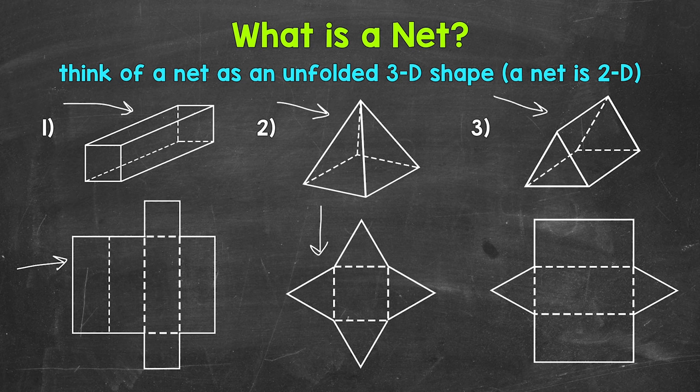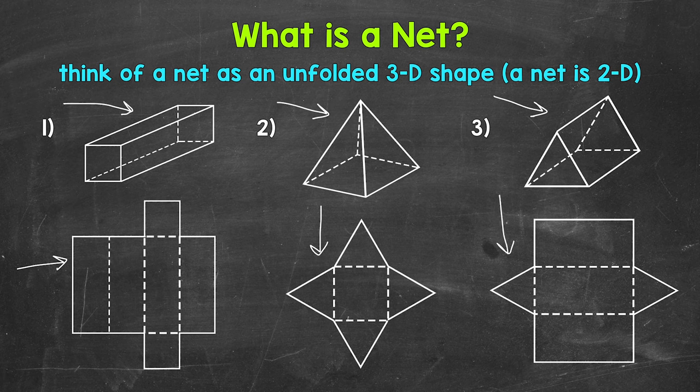And then lastly for number 3 we have a triangular prism with the net of that triangular prism below. So folding along those dashed lines of the net will give us the triangular prism. So there you have it.